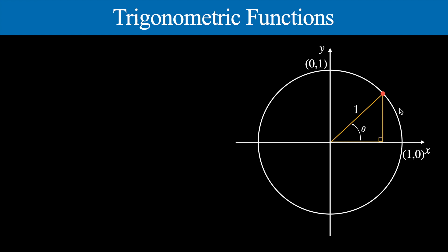We can use our trig ratios. The sine of theta would be the opposite side over the hypotenuse. If we call that length a, then sine of theta equals a over 1 — in other words, a equals sine theta. So the length of that vertical line is sine theta, which is also the y-coordinate of that point. The y-coordinate of that point on the circle is sine theta.